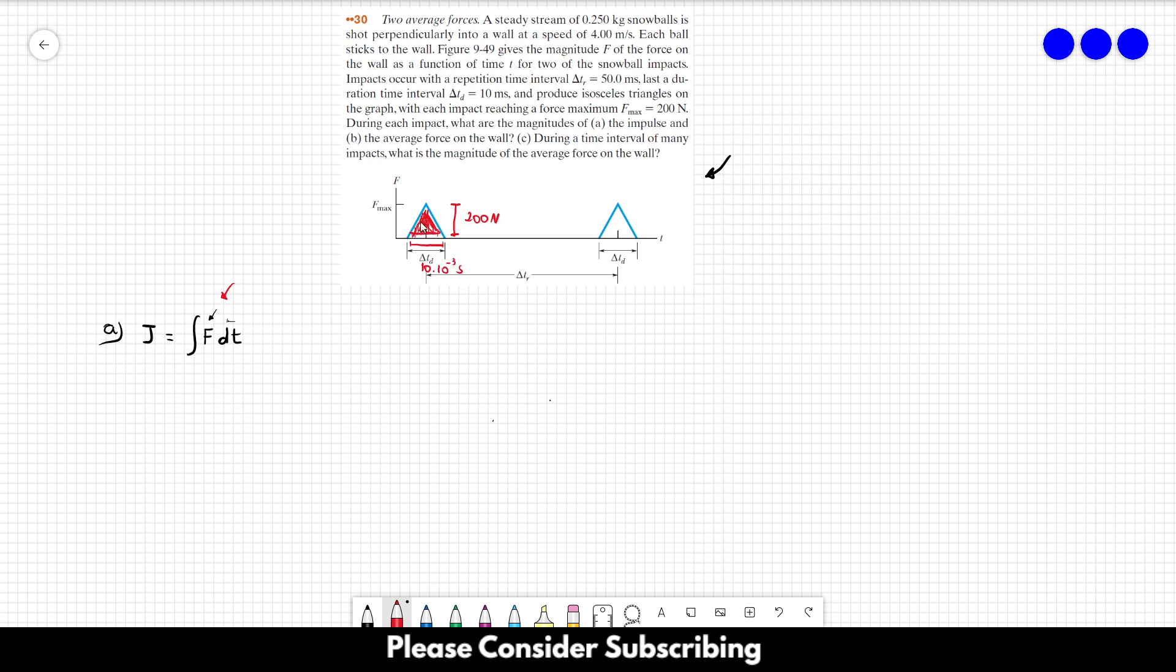So this area over here, it's a triangle, so you have to divide it by 2. It's just 200 times 10 times 10 to the minus 3 divided by 2.